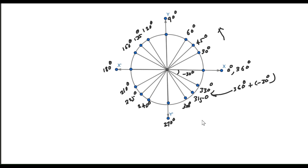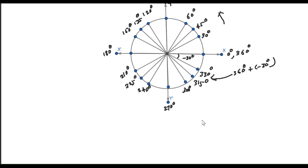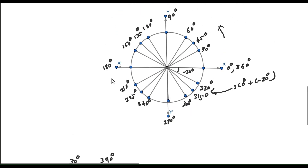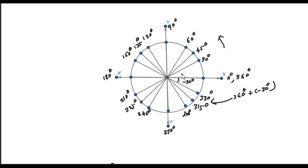There are certain angles known as co-terminal angles. For example, 30 degrees and 390 degrees are co-terminal angles. To get 30 degrees, you move from the x-axis to that position. To get 390 degrees, you complete a full 360-degree rotation and then add this 30 degrees more. So 30 degrees and 390 degrees are the same terminal position — they are co-terminal angles.